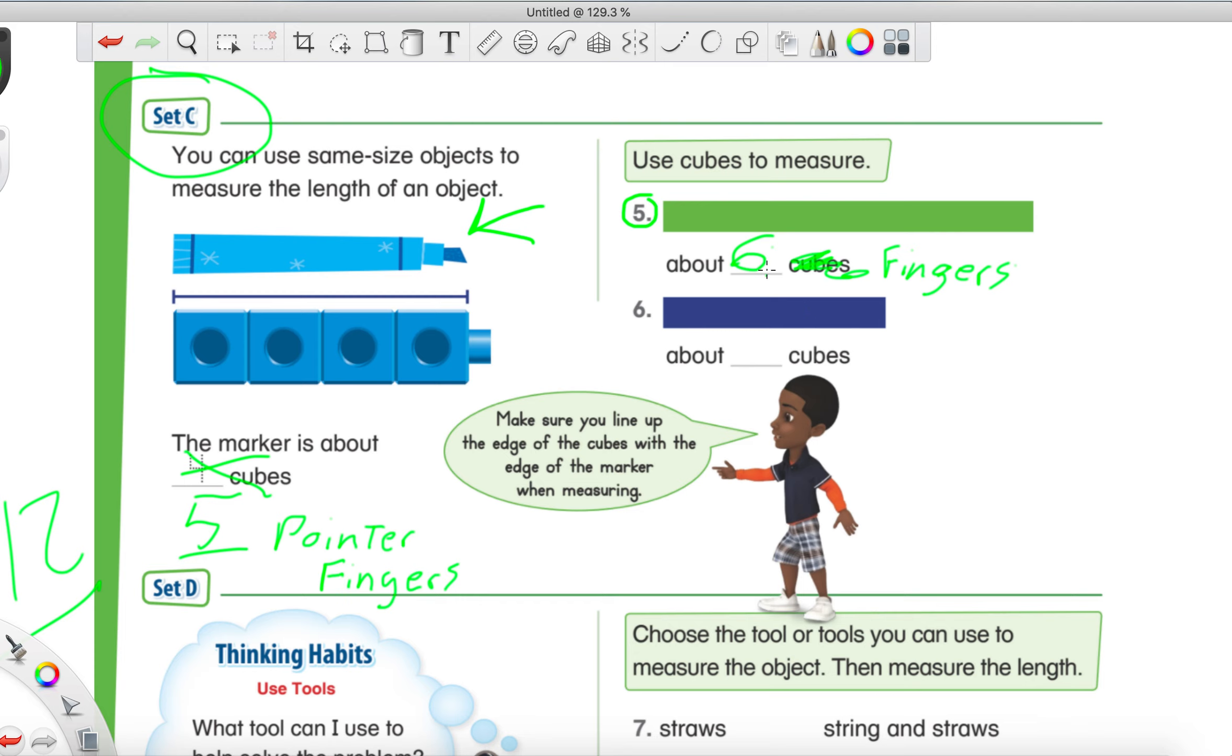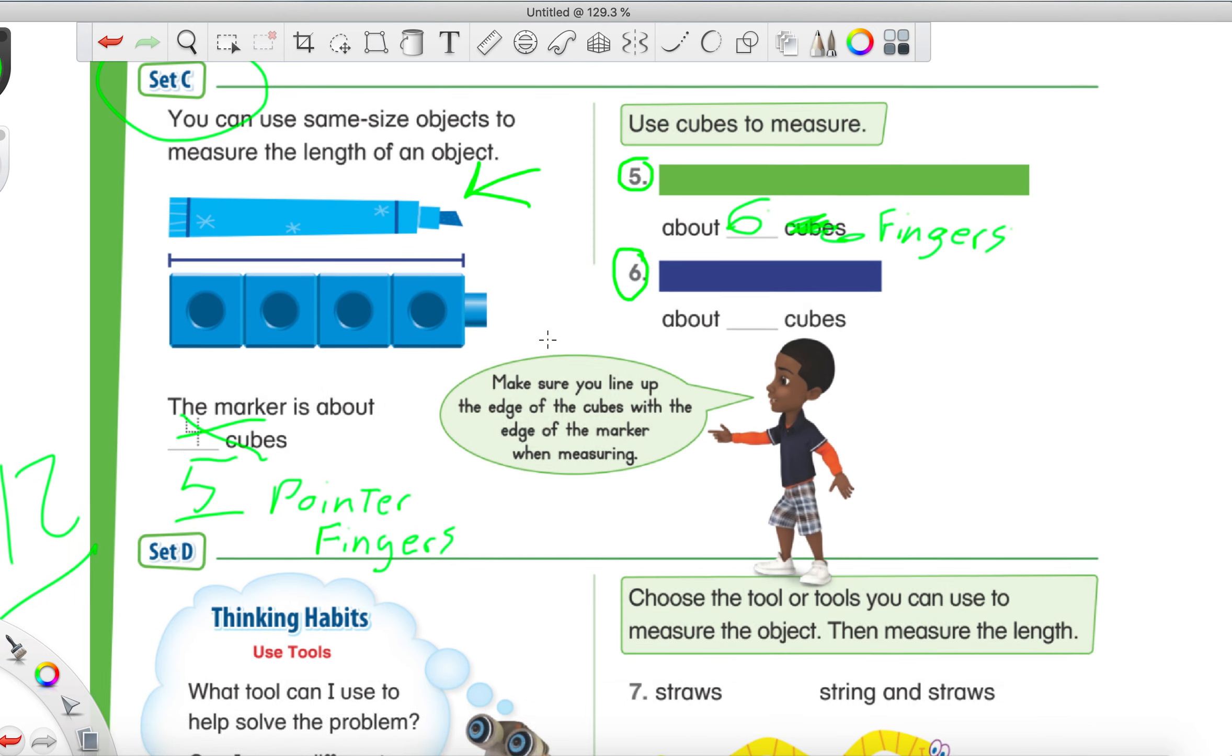And you might've said seven or eight fingers and that's fine because your fingers are smaller than mine and that's okay. Not a big deal, but it will be pretty close to mine probably. I think the most you might have is nine. Go ahead and try number six.